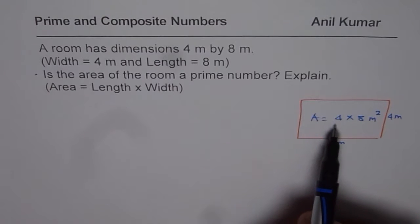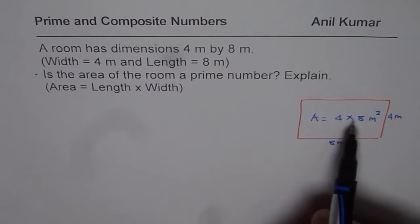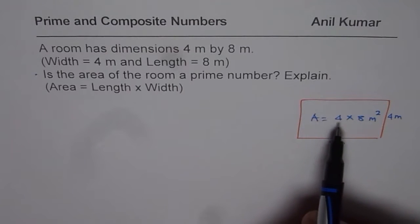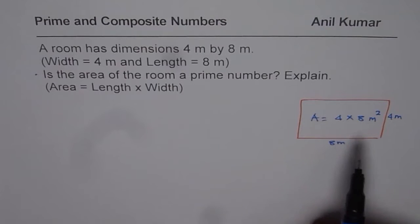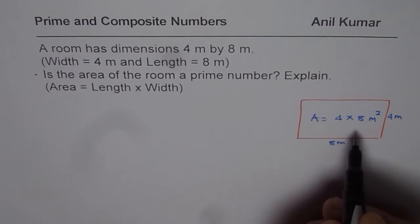So, area will have more than two factors. One of them, of course, is 4, the other one is 8. One is always a factor of any number and the product will be the fourth factor. So, in such cases, area will have more than two factors and therefore, area will not be a prime number.